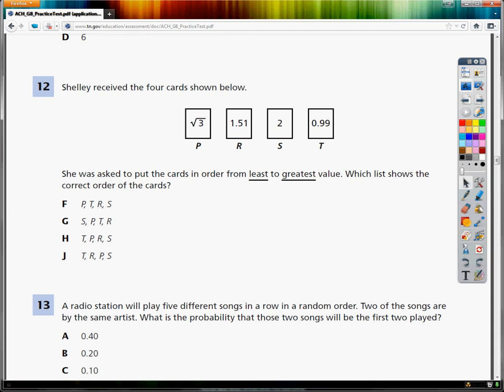The question asks me to put the cards in order from least to greatest. It started off by saying Shelly received the four cards shown below, and I'm hoping it's in a math class. Otherwise, her personal and social life are terrible. But anyway, P is the square root of 3, R is 1.51, S is 2, and T is 0.99.